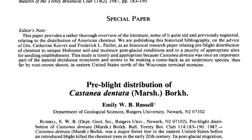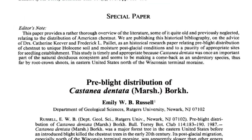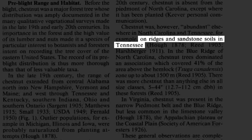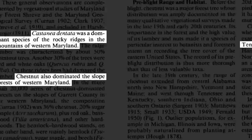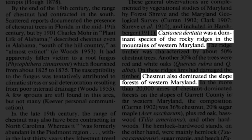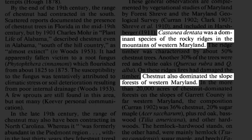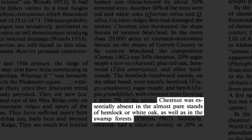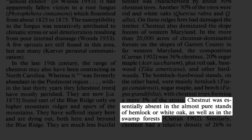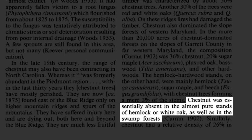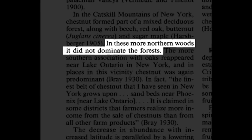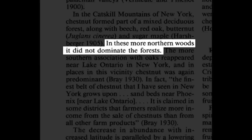And then there's another article whose author, Emily W.B. Russell, stated that American chestnut was abundant on ridges and sandstone soils in Tennessee and was a dominant species of rocky ridges and slope forests of western Maryland. However, chestnut was essentially absent in almost pure stands of hemlock or white oak, as well as in swamp forests, and in the more northern woods, American chestnut did not dominate the forests.